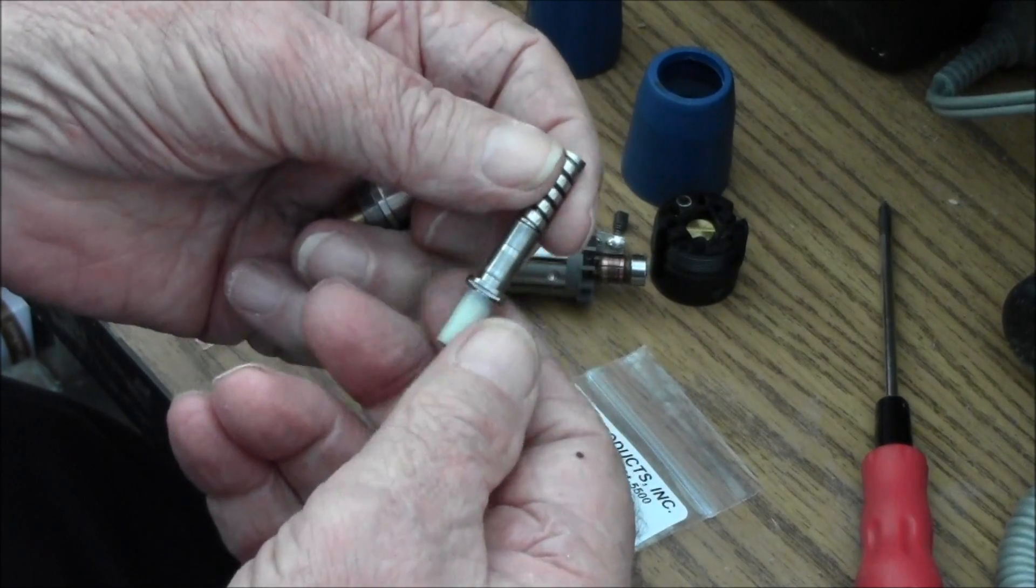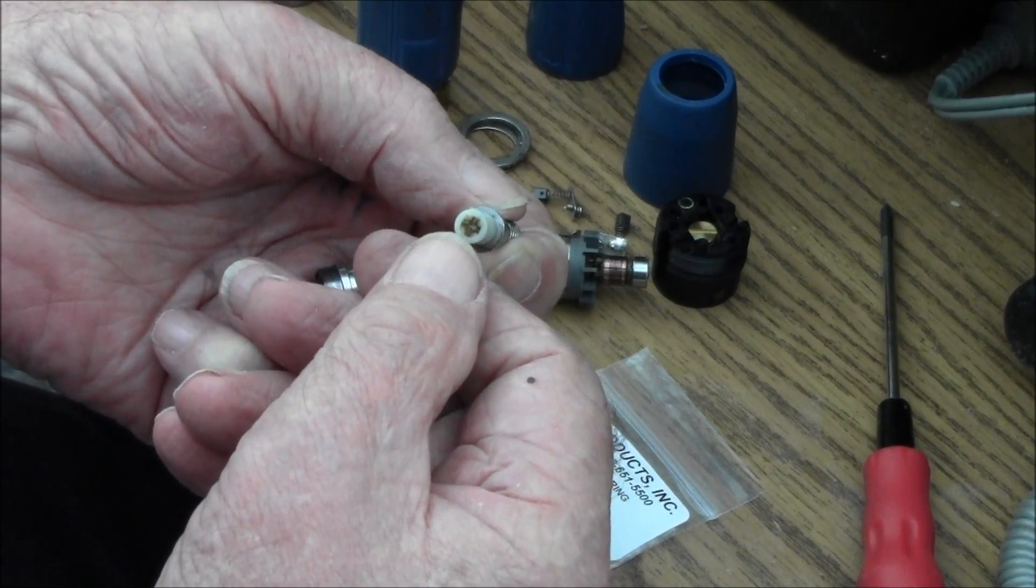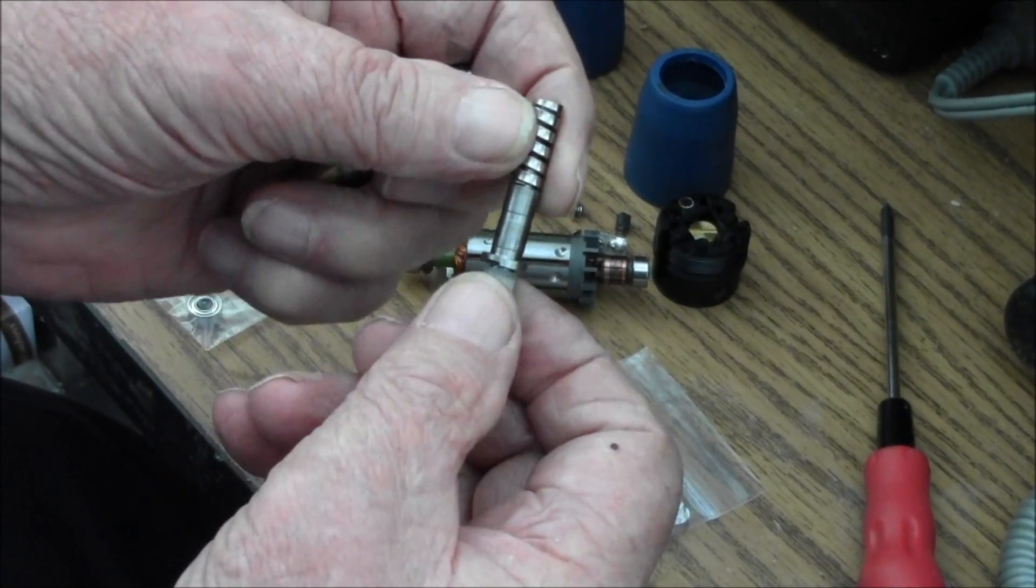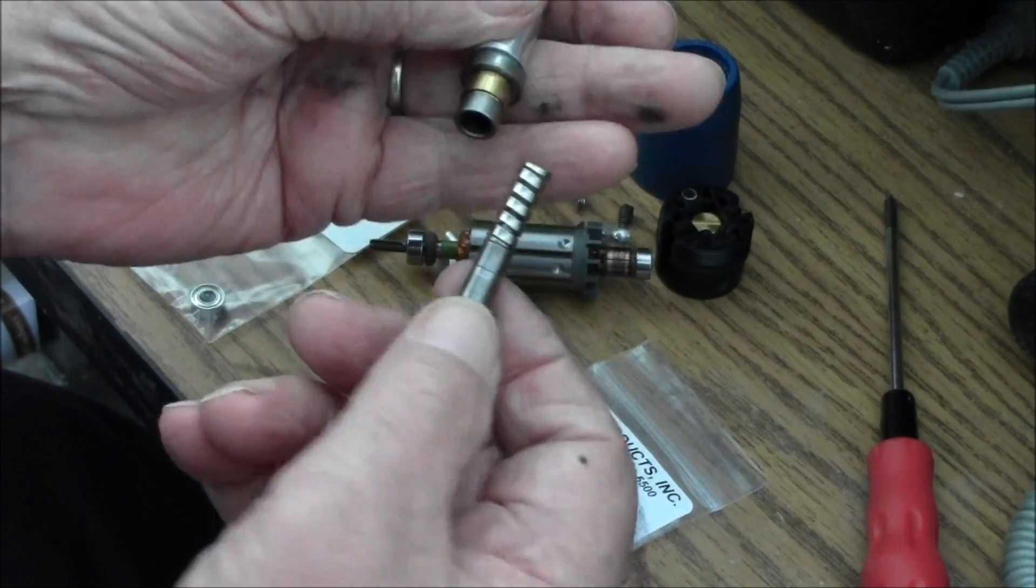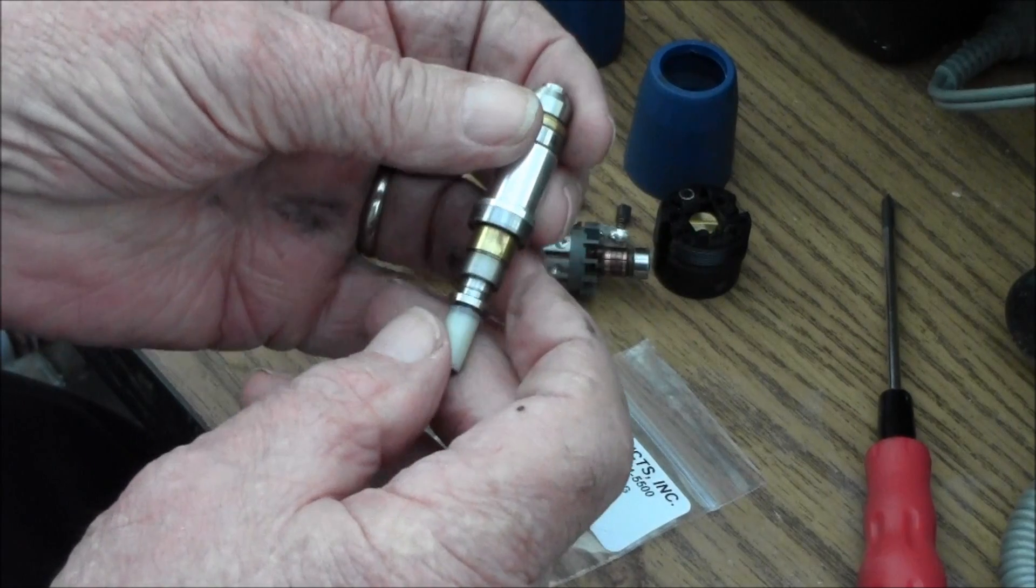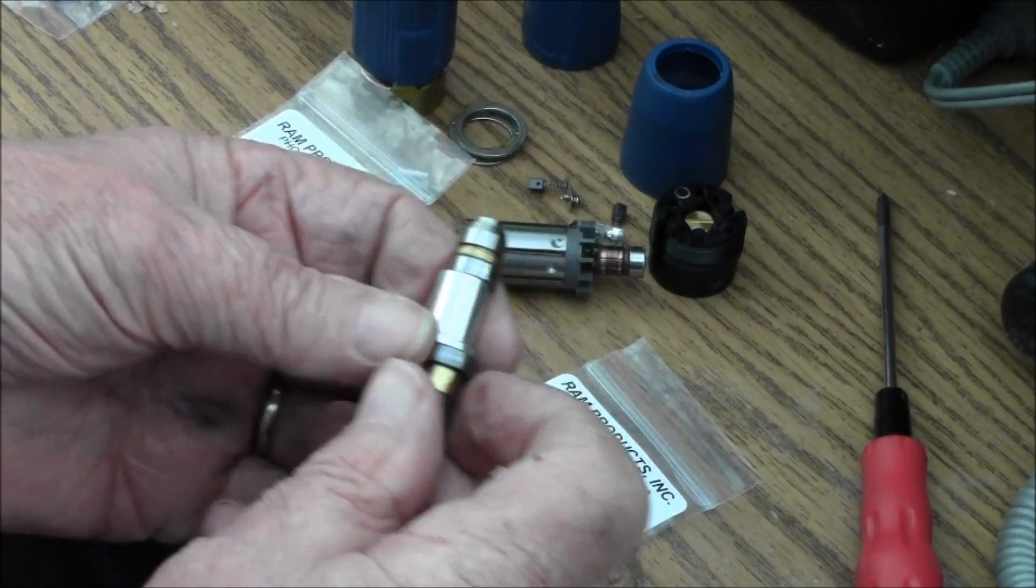This is the part that goes down on the end of the armature shaft. This is the spring that gives you the tension to lock in your tool.